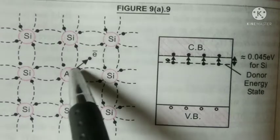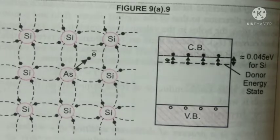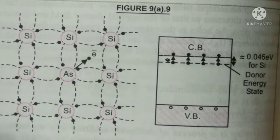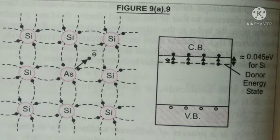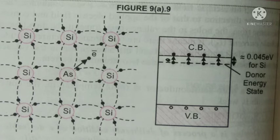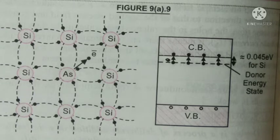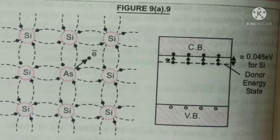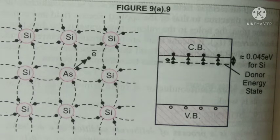So, the impurity atom which donates its fifth electron is known as donor atom, and as we know that the conduction of electricity is due to the motion of electrons, that is negative charge or N-type carrier. So, the resulting semiconductor is known as donor type or N-type semiconductor.